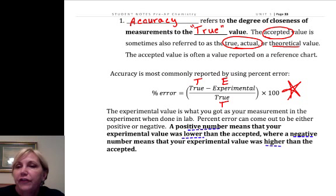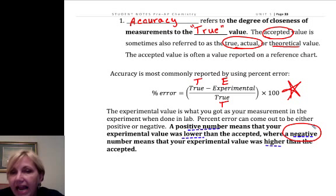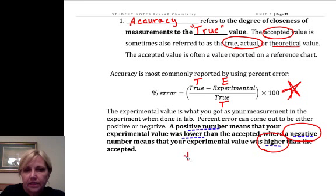So, if you have a positive balance in a bank account, you spent a lower or less amount than is available. If you have a negative balance in your account, that means you spent a higher amount than you should have and you went over. So, positive means it's too low. Negative means it's too high.